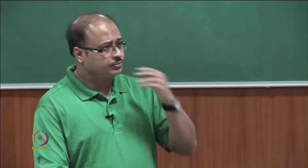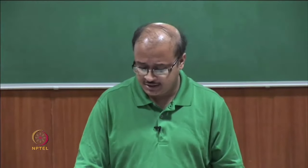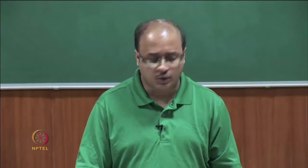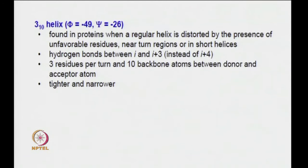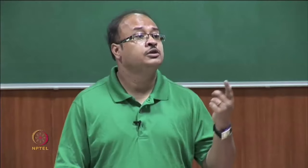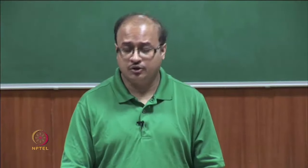The last slide where we stopped mentioned other unusual helices. We have talked about the right-handed helix as the most common one — what are the other helices possible? One is referred to as the 3₁₀ helix. It is found in proteins where a regular helix is distorted by unfavorable residues near turn regions or in short helices. Hydrogen bonds are between i and i+3 residues instead of i+4 as in a regular alpha helix. There are 3 residues per turn and 10 backbone atoms between donor and acceptor atoms — tighter and narrower than a regular alpha helix.